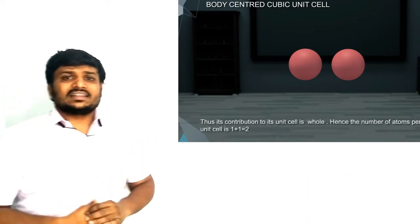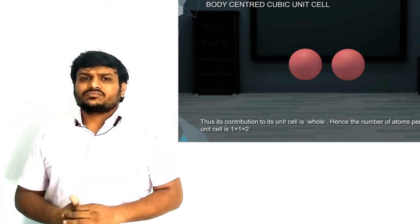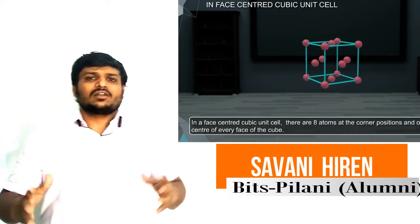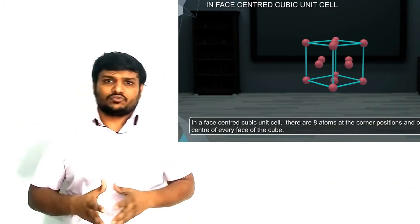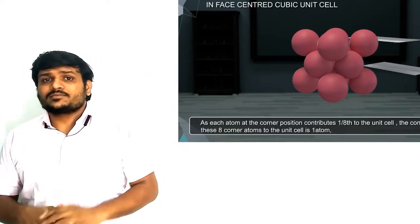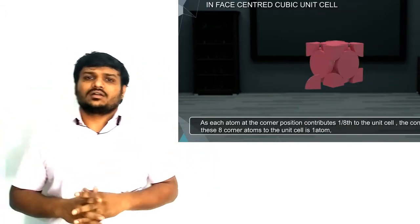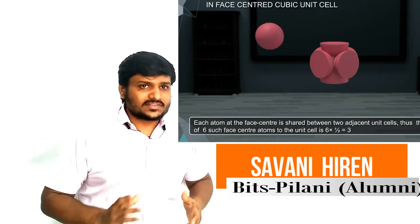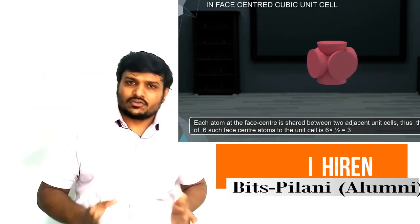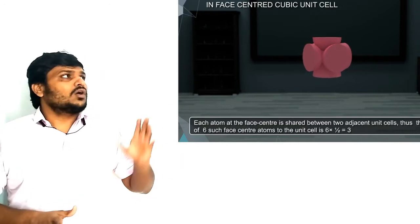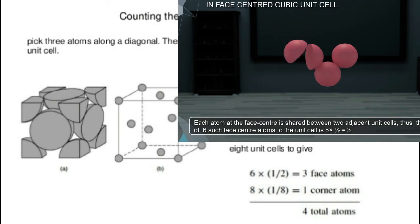The next one is the face-centered unit cell, which is very interesting. In FCC, atoms are present at all corners and at the center of each face. There are six face atoms, and from each face we get half, so six times one-half equals three atoms from the faces. One atom comes from the corners. So the total number of atoms in FCC is one plus three, which equals four atoms per unit cell. This also applies to CCP, which also has four atoms per unit cell.